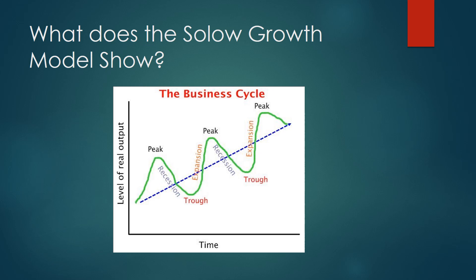We can very simply look at what the Solow growth model shows by looking at the business cycle. The business cycle shows levels of real output relative to time, and it shows that over time we get peaks in GDP and we get troughs. For example, a peak would have been 2006 and a trough would perhaps be 2010. It shows that over time GDP is increasing, represented by a dotted blue line that is always increasing. So we have short-term fluctuations in peaks and troughs, but over the long term GDP is actually increasing, and the Solow growth model explains this.